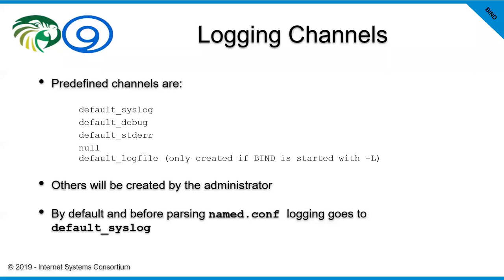For example, lame servers is something you can deal with, but a lot of times it's just out of your control — it's easier to log that to null than to worry about parsing it. Regarding default_log_file: that one is created only if BIND is started with dash uppercase L, followed by the file on disk into which this log should be sent. This allows you to create a log file kind of on the fly if you're doing debugging. I've never in actual production seen this being used — I'm curious as to how other people are using it if it actually is.